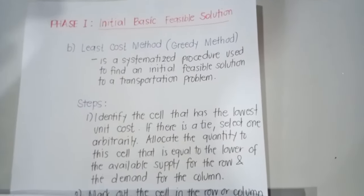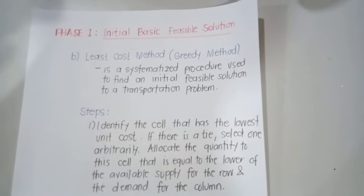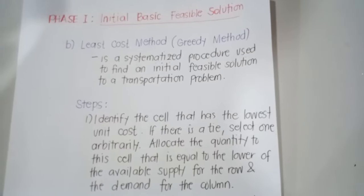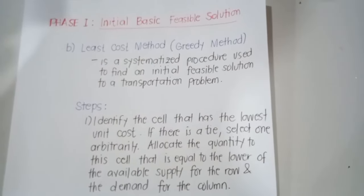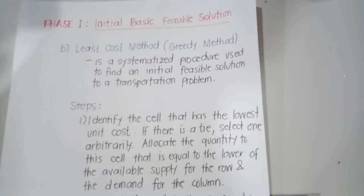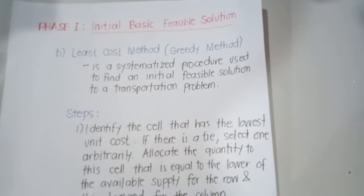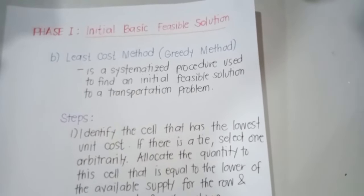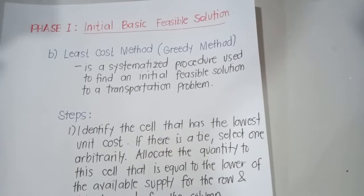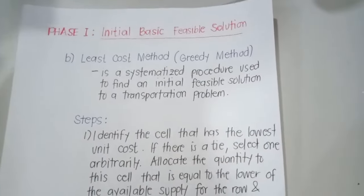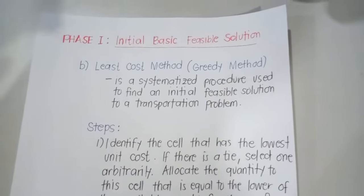The second method used to establish the initial basic feasible solution is the Least Cost Method, also known as the Greedy Method. It is a systematized procedure for finding an initial feasible solution. In this method, allocation begins with the cell that has the minimum cost, and lower-cost cells are chosen over higher-cost cells, with the objective of achieving the least transportation cost.